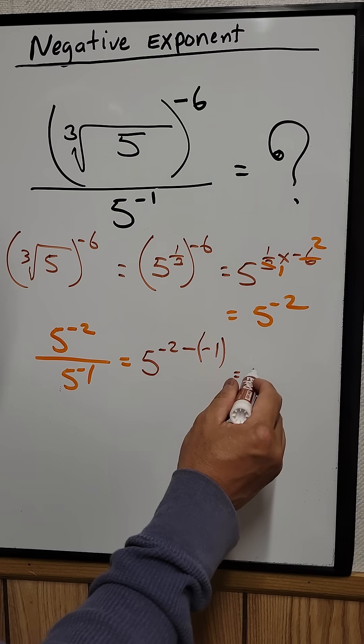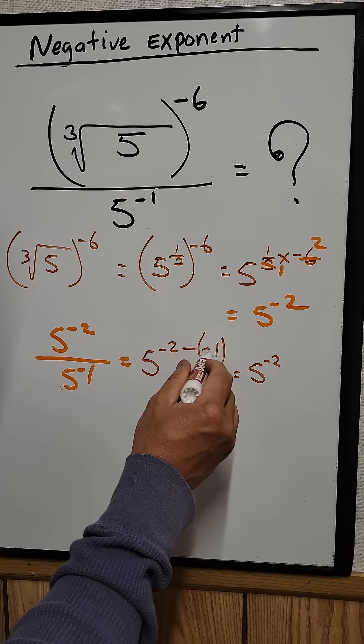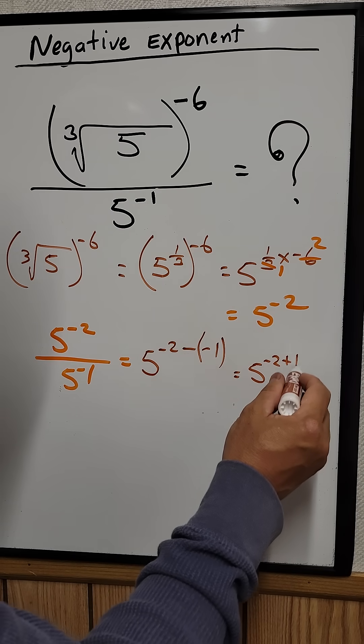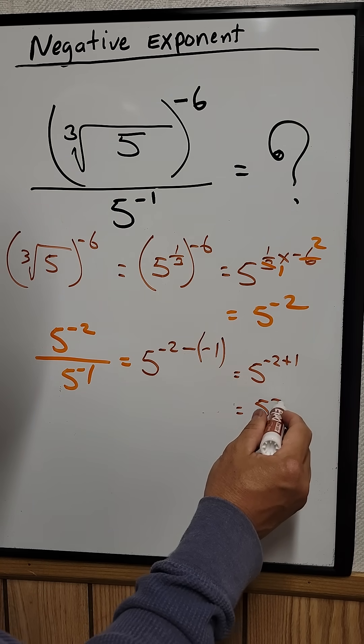So that's equal to 5 raised to the negative 2. So minus times minus equals plus or plus 1. So this becomes 5 raised to the negative 1.